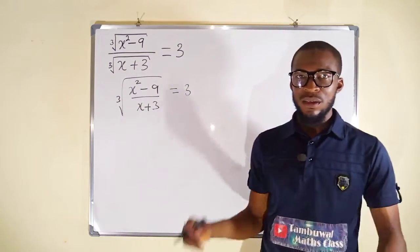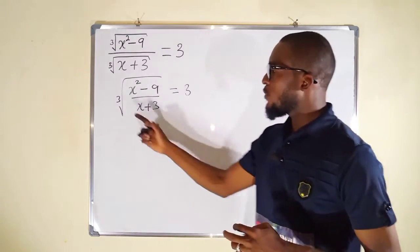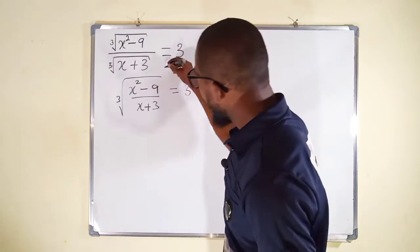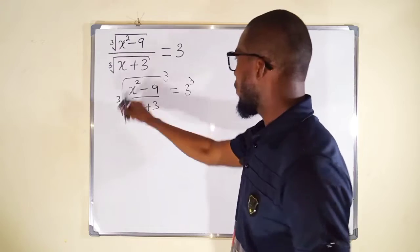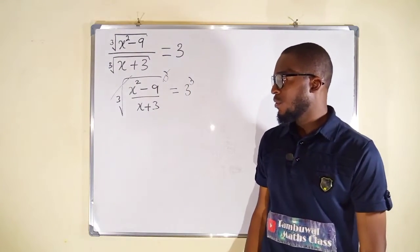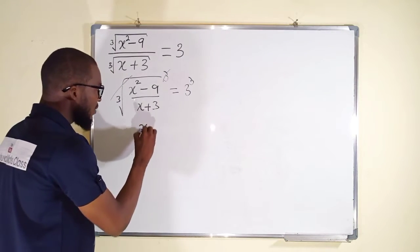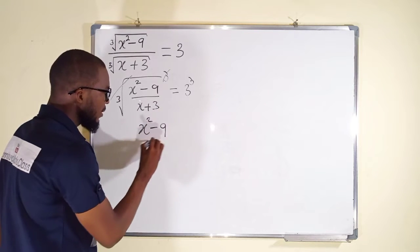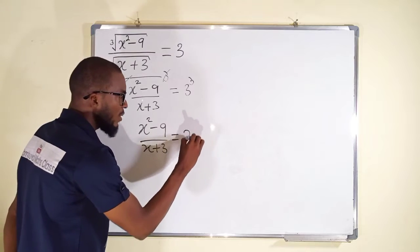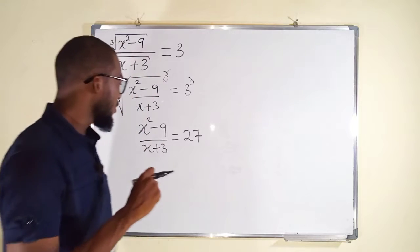The left-hand side is under a cube root, and we want to eliminate it. The opposite of a cube root is the power of 3, which is cubing. So we take the power of 3 from both sides to eliminate the cube root — this power of 3 will automatically cancel the cube root. The left-hand side becomes x squared minus 9 divided by x plus 3, and to the right we have 27, because 3 to the power of 3 is 27 (3 times 3 is 9, 9 times 3 is 27).